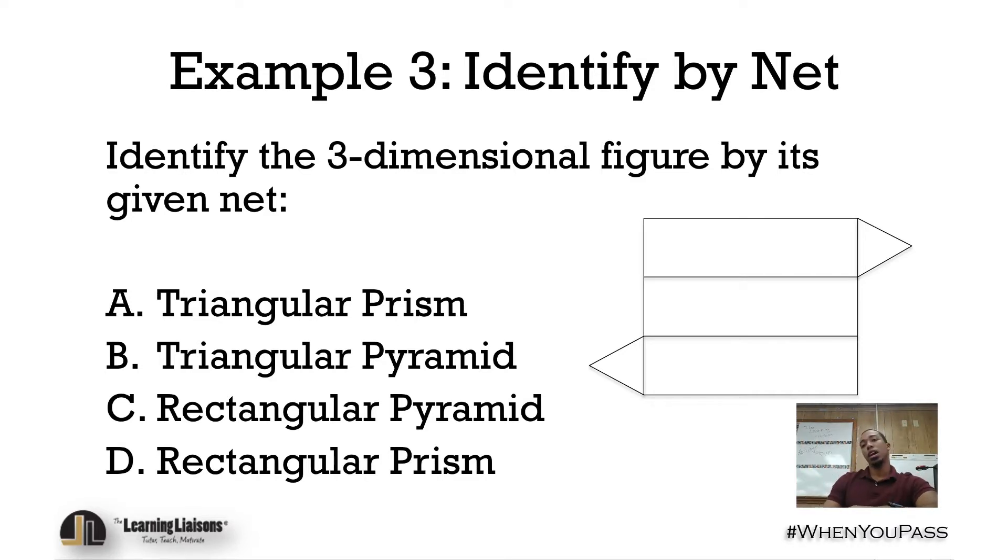So identify the three-dimensional figure by its given net. So we have, let's see, we have three rectangles and two triangles. So I'll give you a second to think about that. Is it possible for this to be a pyramid? That's the question I want to ask first.